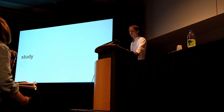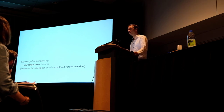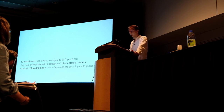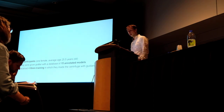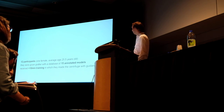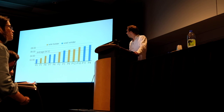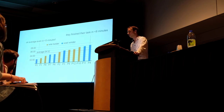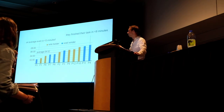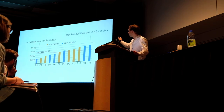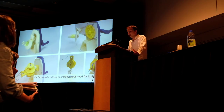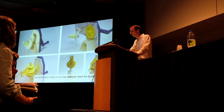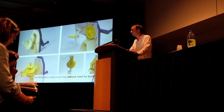To evaluate our approach we conducted a user study, measuring how long it takes users to remix machines with Grafter and whether the objects can be printed without further tweaking. We recruited 12 participants given an annotated model graph with 15 annotated models, requiring up to 10 minutes of training in which they made the centrifuge to understand the system. Results showed all participants managed to make their remixes. They finished the two-part remix task in less than eight minutes, on average less than five minutes. We had two types of models — wire twists and bull binders. The models came out of Grafter immediately ready for fabrication, with no further tweaking needed.